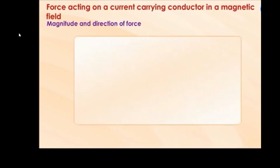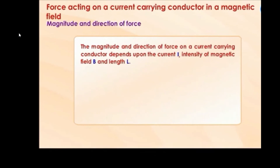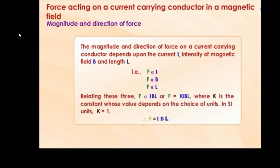Magnitude and direction of force. The magnitude and direction of force on a current carrying conductor depend upon current I, intensity of magnetic field B, and length L. That is, F is directly proportional to I, F is directly proportional to B, and F is directly proportional to L. Relating these three: F is directly proportional to IBL, or F equals KIBL, where K is a constant whose value depends on the choice of units. In SI units, F equals IBL.